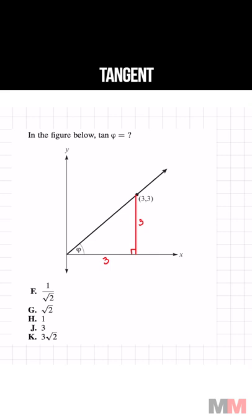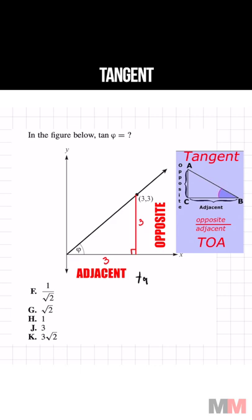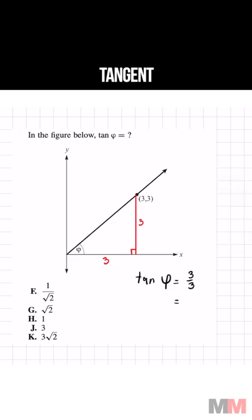And once I have those dimensions for my triangle, the tangent is just opposite over adjacent. So the tangent of phi equals 3 over 3, which equals 1.